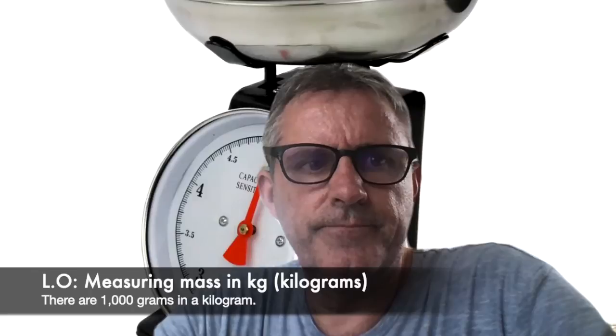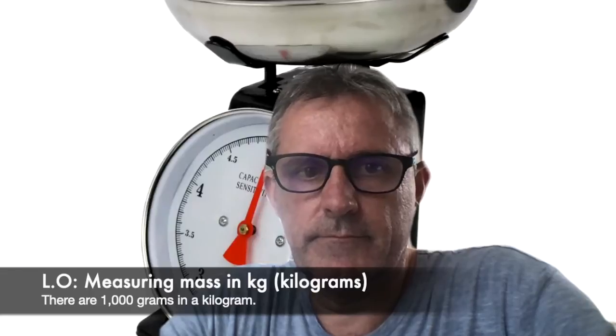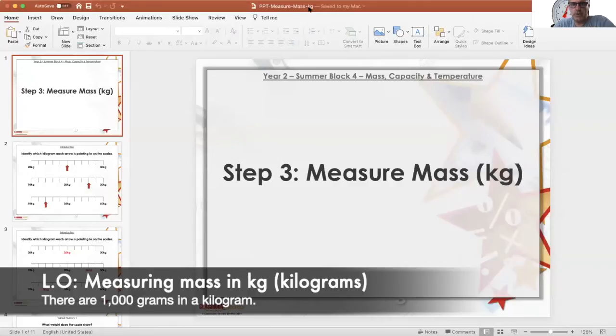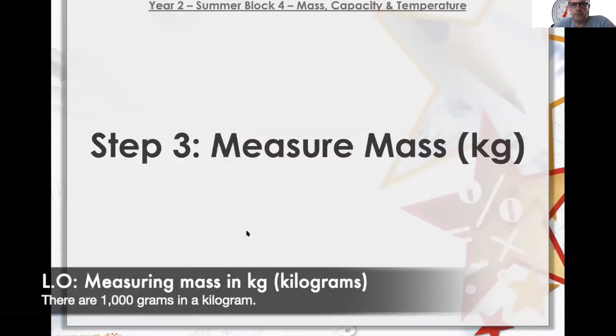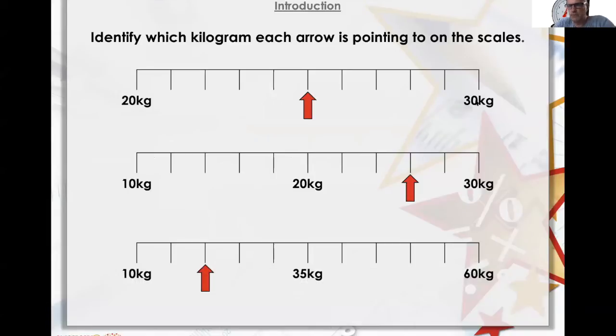Okay, so measuring in kilograms. Identify which kilogram each arrow is pointing to on the scales. 20 and that's 30, so I reckon that's one between each. 21, 22, 23, 24, 25, 26, 27, 28, 29, 30. So that was 25 kilograms.